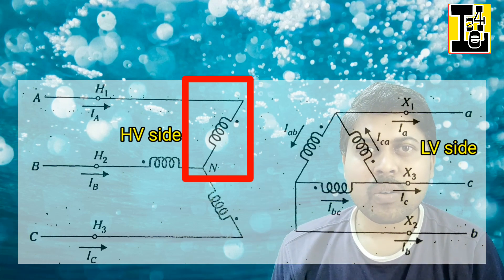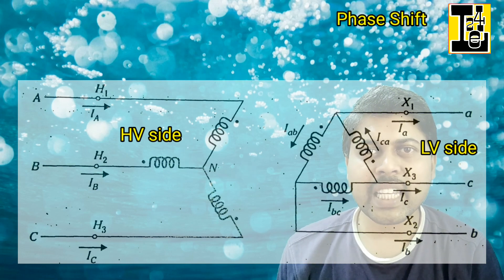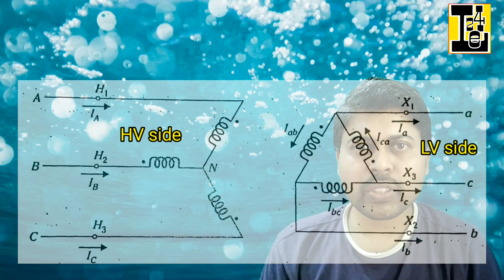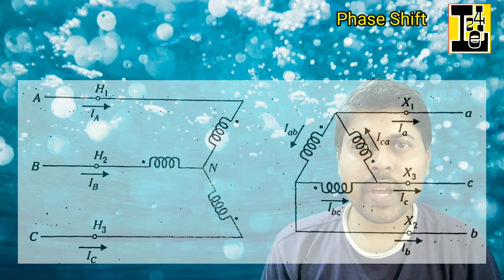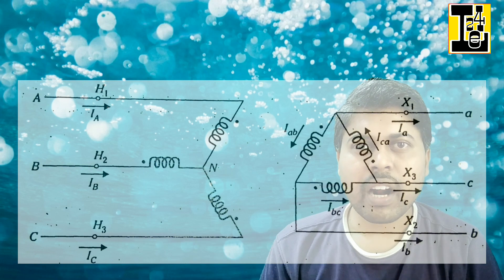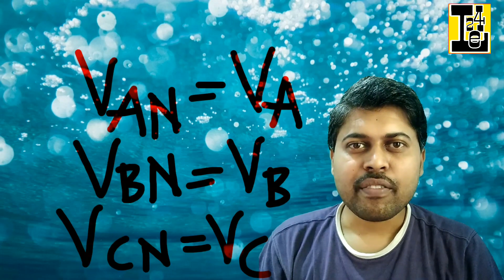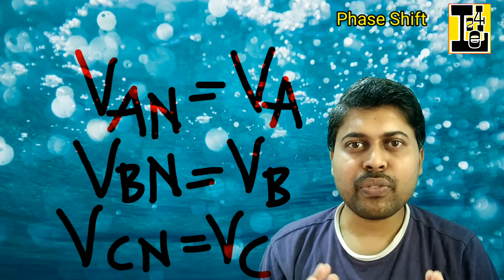The AN winding on the star side is magnetically coupled with the winding AB on the delta side. The location of dots on the windings indicates that VAN is always in phase with VAB, regardless of the phase sequence. For simplicity, VAN is referred to as VA, VBN as VB, and VCN as VC.